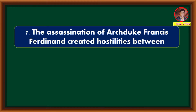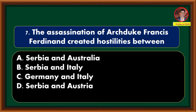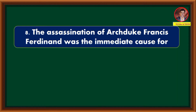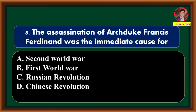The assassination of Archduke Francis Ferdinand created tension between — Serbia and Austria. The assassination of Archduke Francis Ferdinand was the immediate cause for — Second World War; First World War; Russian Revolution; Chinese Revolution. Correct answer is option B: First World War.